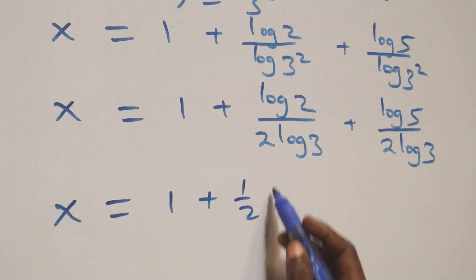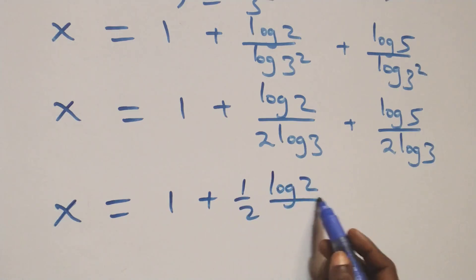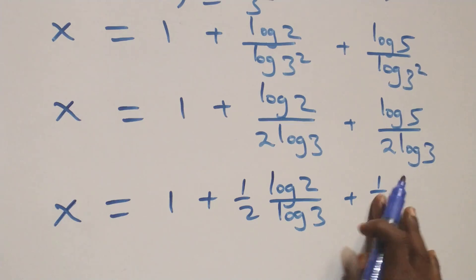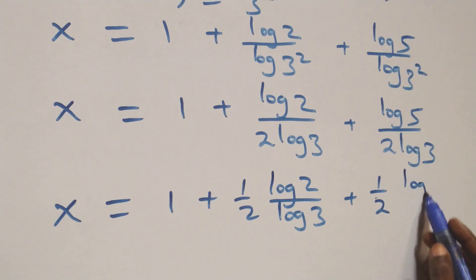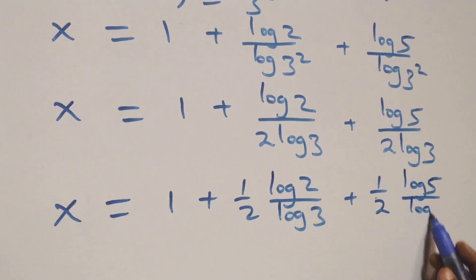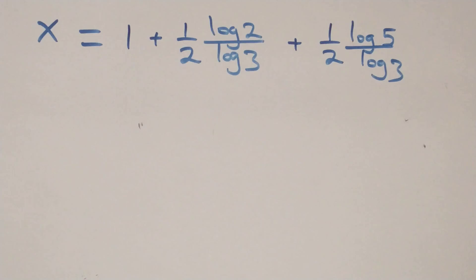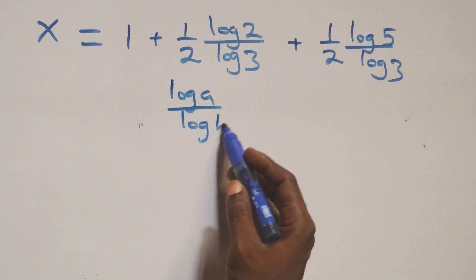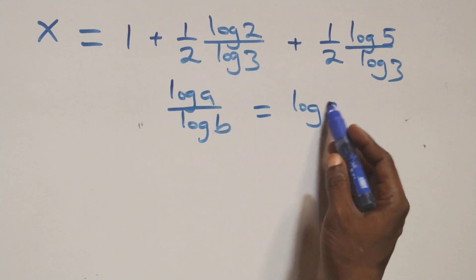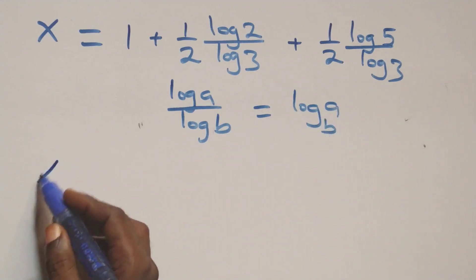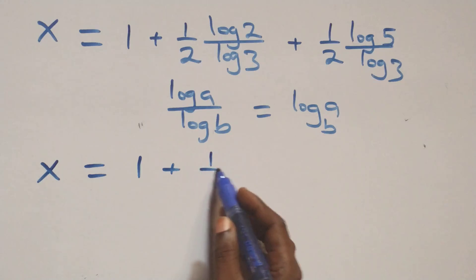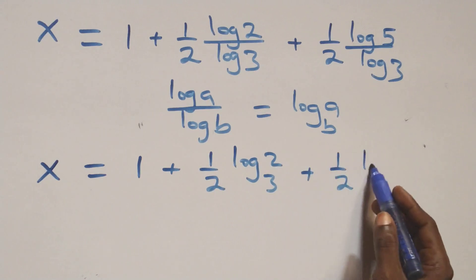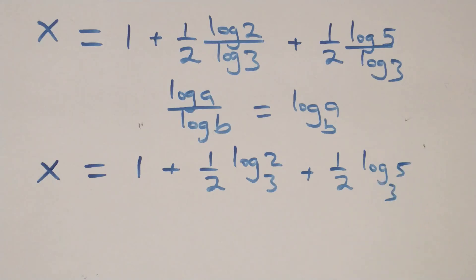We rewrite this as x equals 1 plus one-half times log(2)/log(3), plus one-half times log(5)/log(3). Then we apply the change of base formula: log(a) over log(b) is the same as log base b of a. So x equals 1 plus one-half·log₃(2) plus one-half·log₃(5).